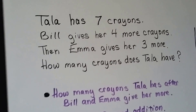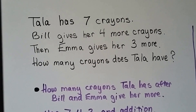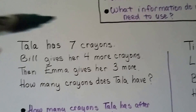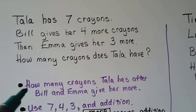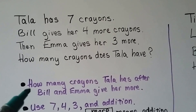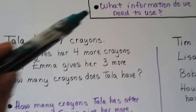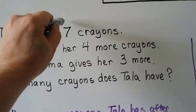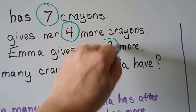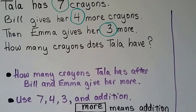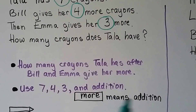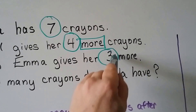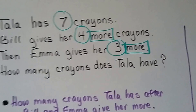Tala has seven crayons. Bill gives her four more crayons. Then Emma gives her three more. How many crayons does Tala have? What do we need to find? We need to find how many crayons Tala has after Bill and Emma give her more. What information do we need to use? We need to use the seven, the four, and the three — these are the important numbers. How will we use the information? Addition. 'More' means addition — Bill gives her more, Emma gives her more, so we're going to add these numbers.